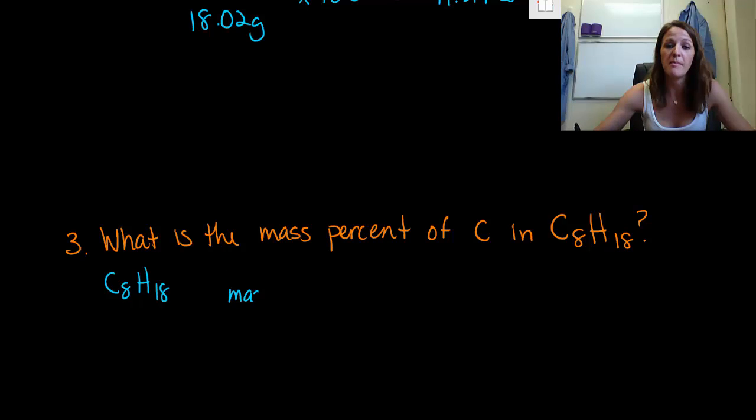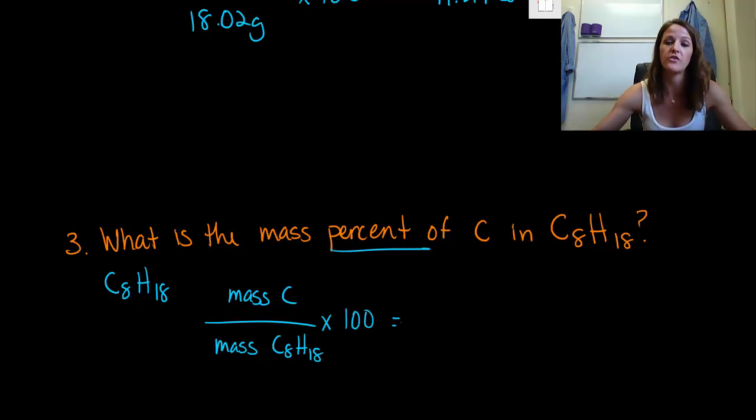Now what we're going to do is the mass of carbon divided by the mass of our entire molecule, which was C8H18. This is mass percent, so you cannot forget to multiply times 100. All right, so let's plug everything in here. Carbon has an atomic mass of 12.01 grams, but there's eight different carbons in this molecule, so we have to multiply this times eight, all over the mass of octane, which is close to 97.26 grams.